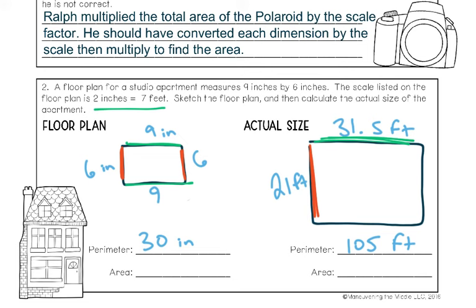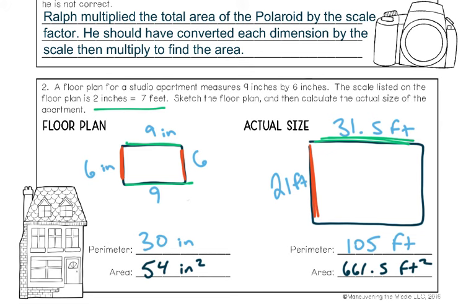Now let's find the area, which is the space inside — base times height for each shape. For the drawing: 6 times 9 gives 54 square inches. This time you do write square inches because it's the space inside. For the actual apartment: 21 times 31.5 gives 661.5 square feet — a pretty good-sized apartment. If asked how many times larger the area is, you divide 661.5 by 54 and get 12.25. The area was impacted much more than the perimeter.